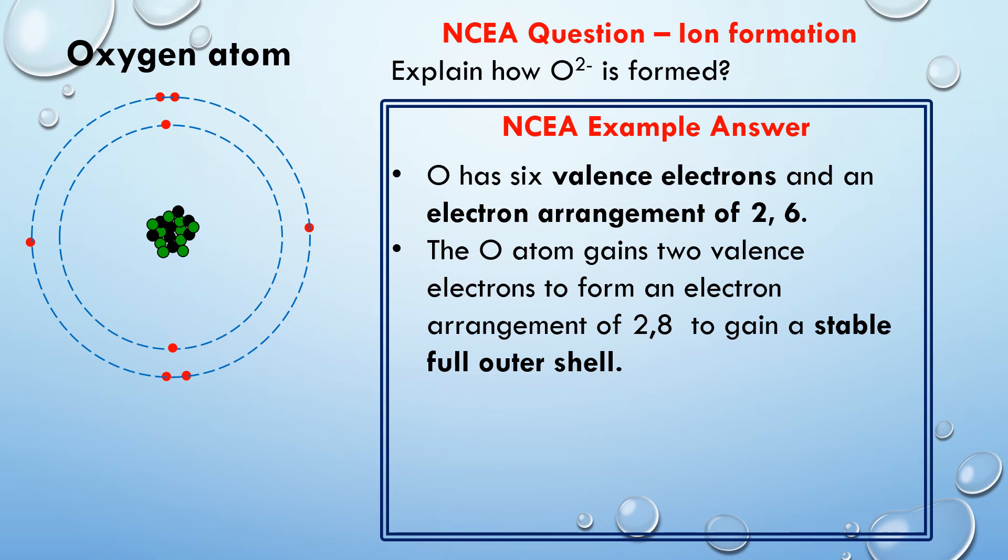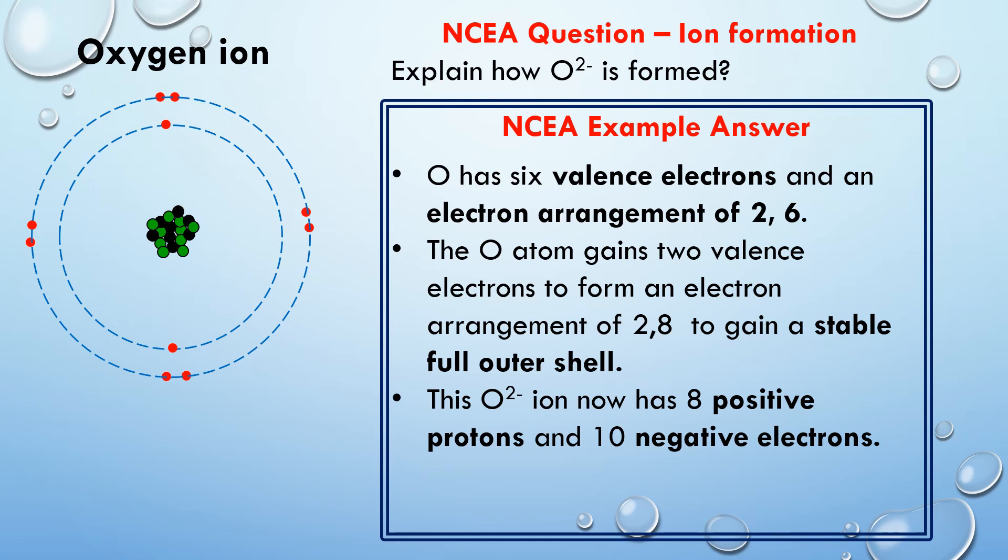The next statement is where we compare the number of positive and the number of negative particles. Oxygen is atom number eight. So it has eight positive protons and it has 10 negative electrons now because of course it's gained two. So eight positive protons, 10 negative electrons. We then do the calculation with that and we sum that up in our final sentence. And our final sentence here is just going to be saying, well, we've got two more negative electrons than positive protons. So it must be a two minus charge.